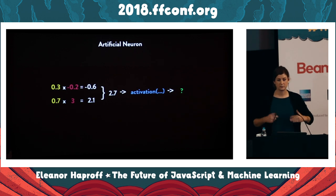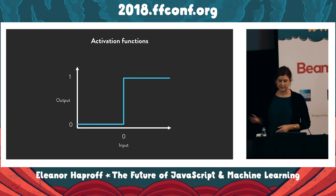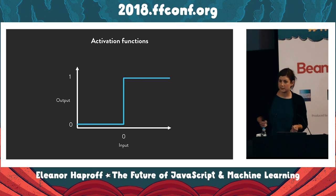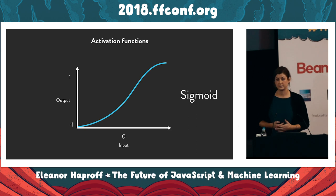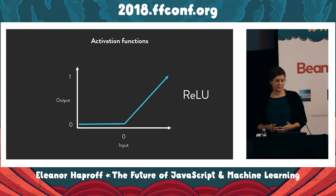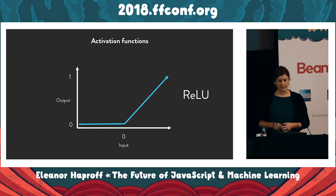The inputs get multiplied by the weights and then added together and passed into the activation function. Our activation function is going to be really simple: if the sum of the inputs times the weights is positive, the neuron will activate, and if it's negative, it will not. In this case, the neuron receives a positive value of 2.7, and so it will activate — the activation returns a 1, not a 0. This activation function is called a threshold function. Other common ones are sigmoid and ReLU, both of which allow smaller changes to be taken into account when deciding whether a neuron activates or not.